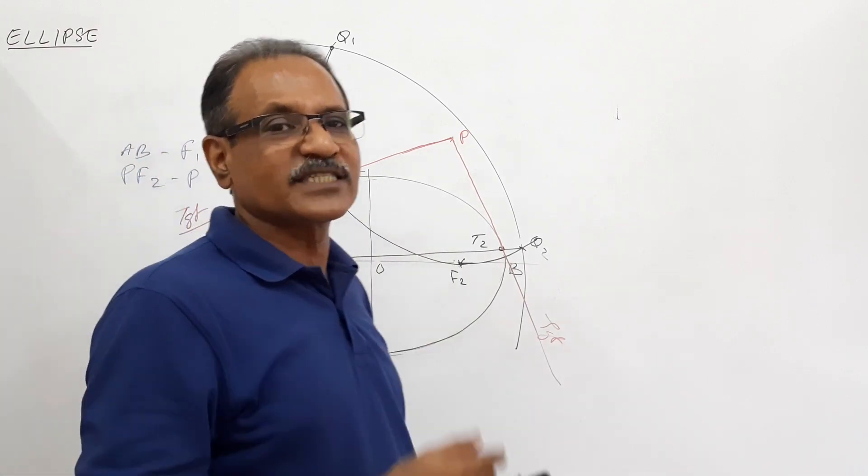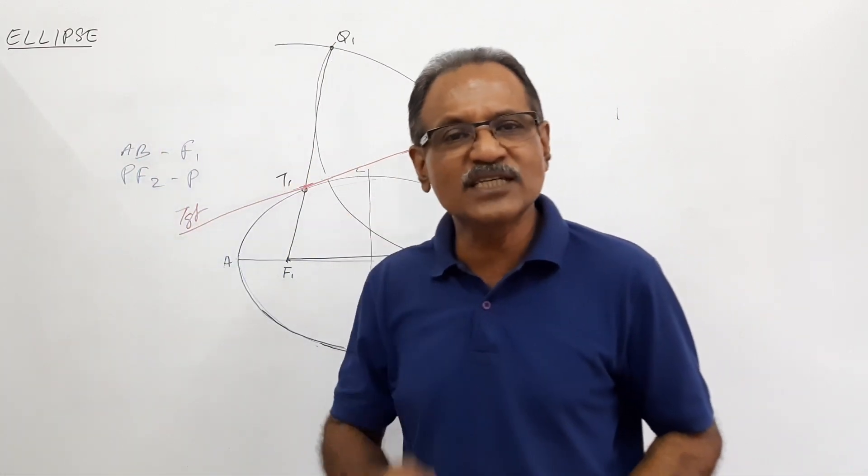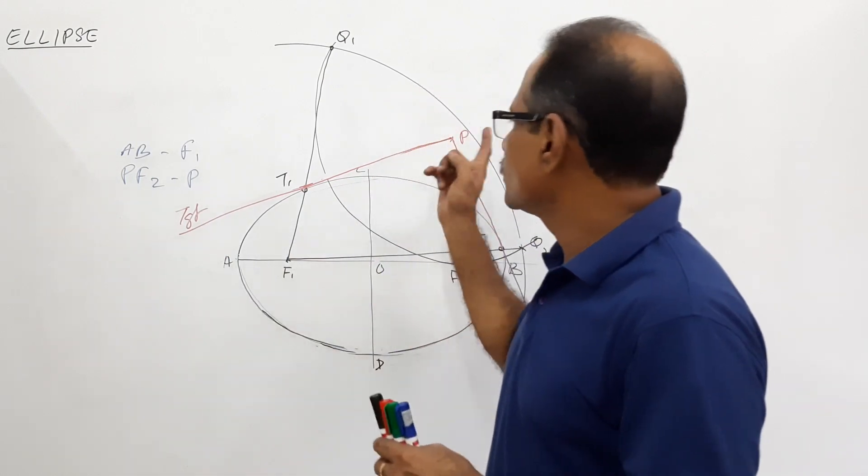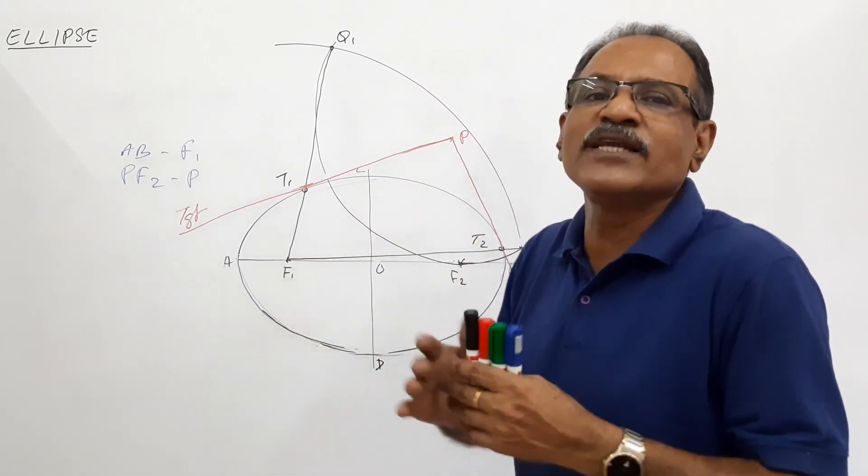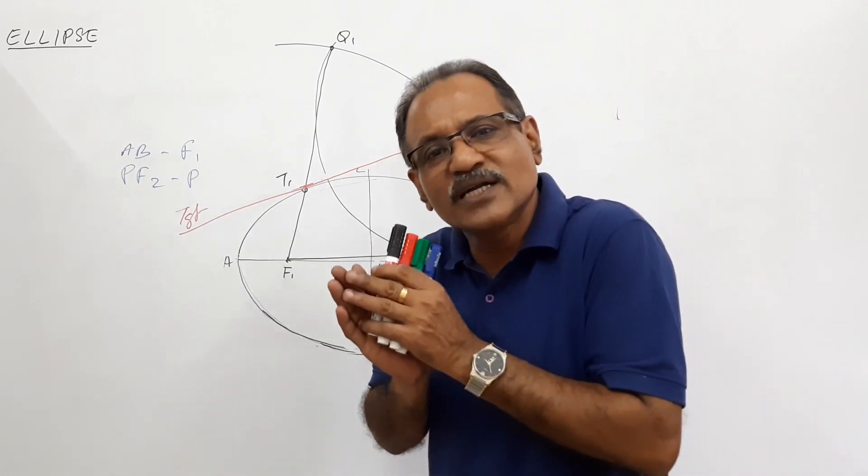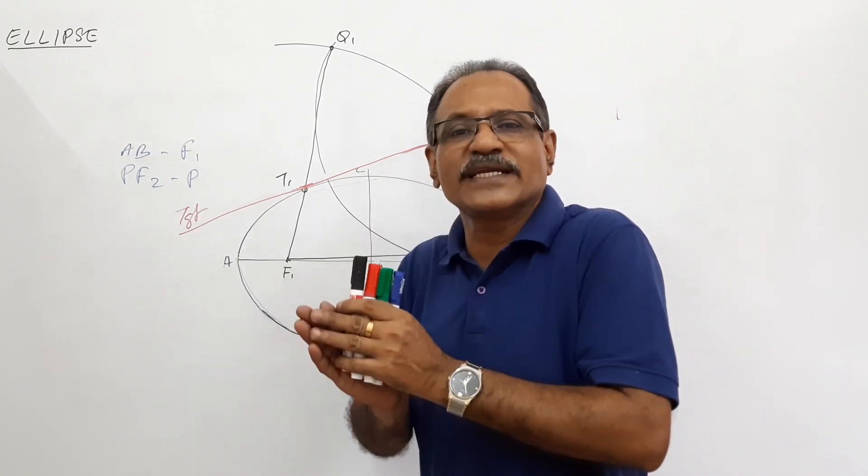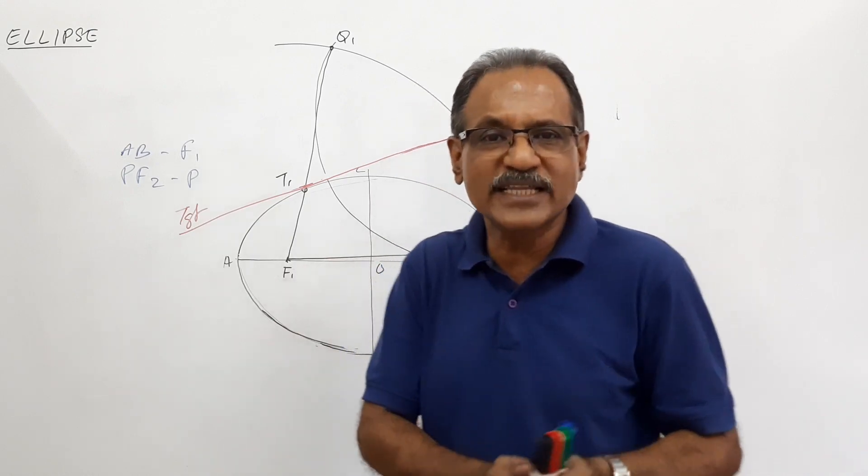Irrespective of the method of construction of the ellipse, we have seen three methods for construction of ellipse. Whatever be the method, this procedure is applicable in all those ellipses. Whenever you have to draw a tangent to the ellipse from a point outside the ellipse, you can follow this method.